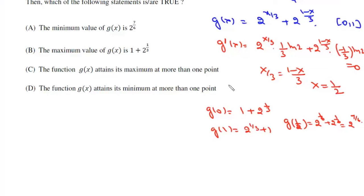Now if we find g double dash x it will be greater than 0, that means it's minimum value is 2 to the power of 7 by 6 and its maximum value is 1 plus 2 to the power of 1 by 3. That means this option A is correct: minimum is 2 to the power of 7 by 6, maximum is 1 plus 2 to the power of 1 by 3.